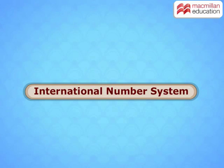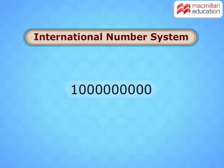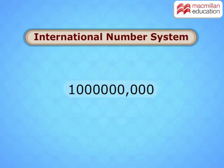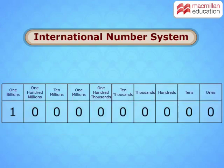In the international number system, the commas are placed first after the hundreds place and then after every three digits. The place values are: units, tens, hundreds, thousands, ten thousands, hundred thousands, millions, ten millions, hundred millions, and billions.